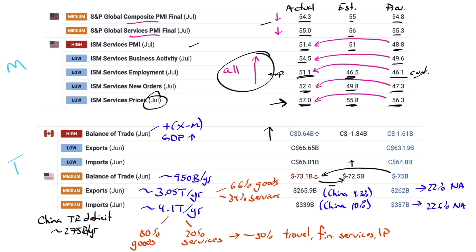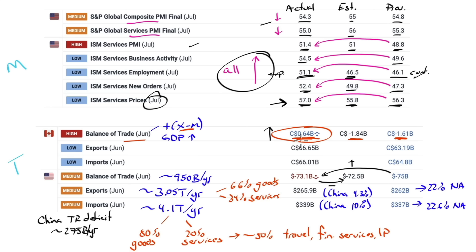Balance of trade - I think more attention will start to be paid here for Canada. This is for June. This is the X minus M component of GDP - C plus I plus G plus the trade deficit. $640 million, 0.64 billion surplus. The expectation was for a deficit of $1.84 billion; the previous month was negative $1.61 billion. Here we now have a surplus - that is the country getting richer. That's money from outside coming in, a boost to GDP for Canada for June. The US balance of trade for June was a deficit - it's been a deficit for decades - revised to negative $75 billion, came in at negative $73.1 billion.